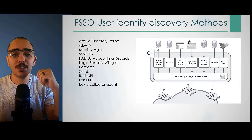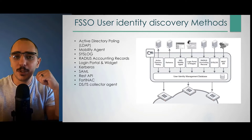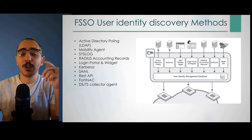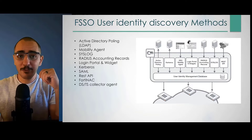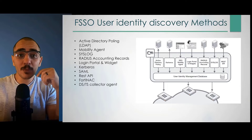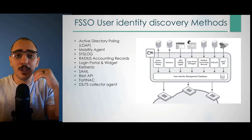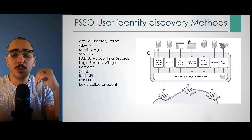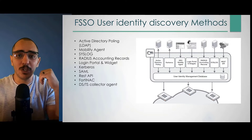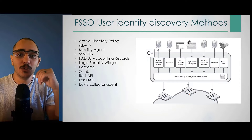For single sign-on user identity discovery methods — we talked about single sign-on, where a user provides their login information once and doesn't need to provide it every time they access a destination. For that, FortiAuthenticator needs to pull the user identity information. It needs to pull the user logon IP address and then, using DNS, translate that IP address into a username. So it just keeps track of user identification and user logging.